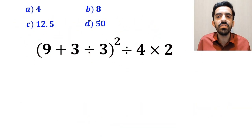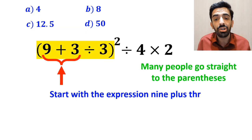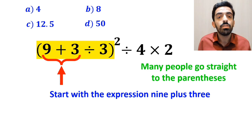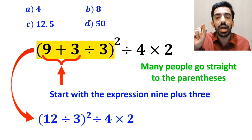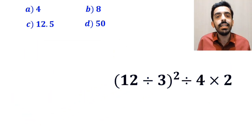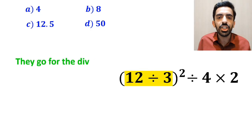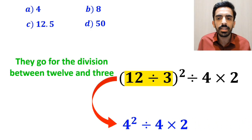In the first step, many people go straight to the parenthesis and start with the expression 9 plus 3. So instead of this expression, they write (12 divided by 3), all squared, divided by 4, then multiplied by 2. In the next step, they go for the division between 12 and 3, and instead write 4 squared divided by 4 multiplied by 2.